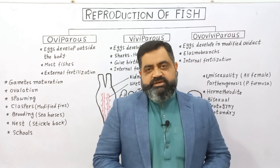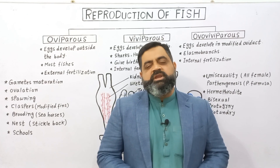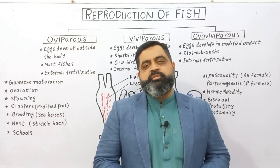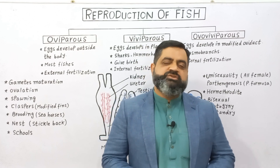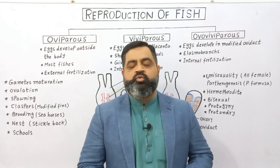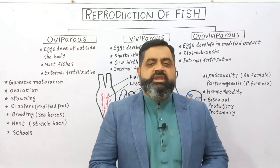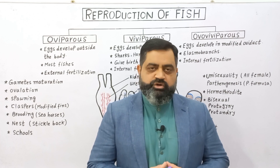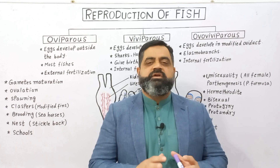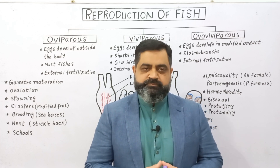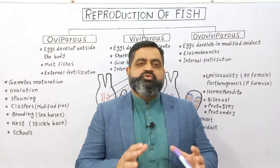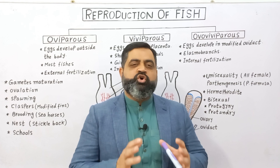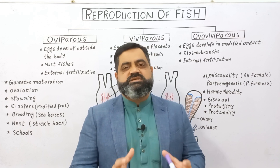Hello to all students. In this video lecture we are going to study reproduction in fish. As you know, fish are aquatic vertebrates and they have different species living in water, and they also have different mechanisms of reproduction. There are usually three main types of reproductive methods adopted by fish. Let's discuss them one by one.